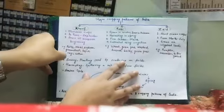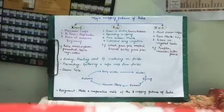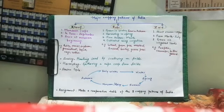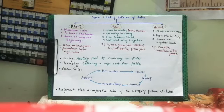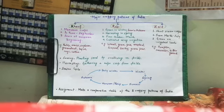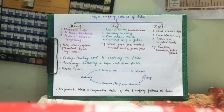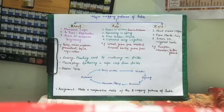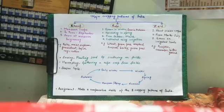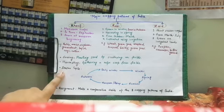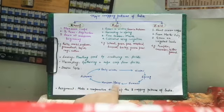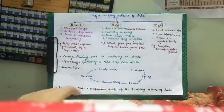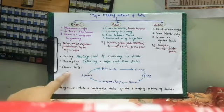The major cropping patterns of India depend on the conditions we just talked about: soil, temperature, water, etc. These patterns are classified according to the season in which the plant is sown and harvested. The season cycle in India is: summer, then monsoon, then autumn, early winter and winter, then spring, and then summer again. These three cropping patterns depend on this season cycle for the sowing of plants as well as their harvesting.